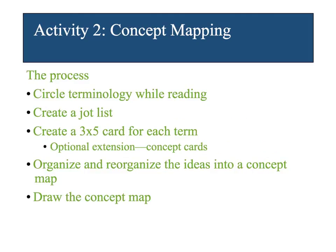The process of concept mapping for this section is: students circle the terminology while they read, then create a jot list of the terms. They can put that on a sheet of paper, or go right to three-by-five cards and make a card for each term. There's also an optional extension where instead of just putting the term on a card, they can make it into a concept card. Then they'll use all these cards to organize and reorganize the ideas into a concept map.